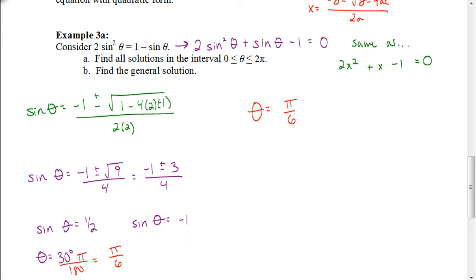But we get 270 degrees. We have to convert that to radians by multiplying it by pi over 180. When we reduce that, we get 3 pi over 2. So our other solution is going to be 3 pi over 2.